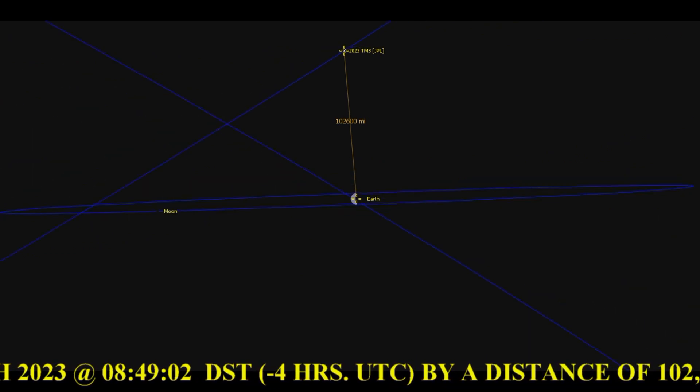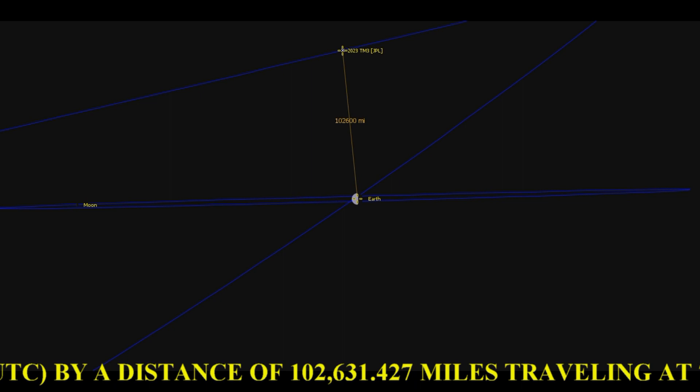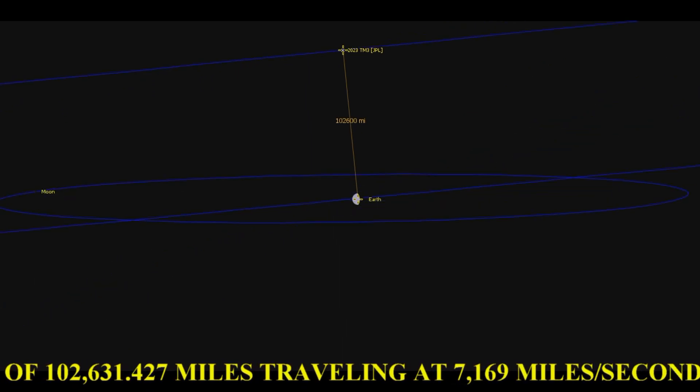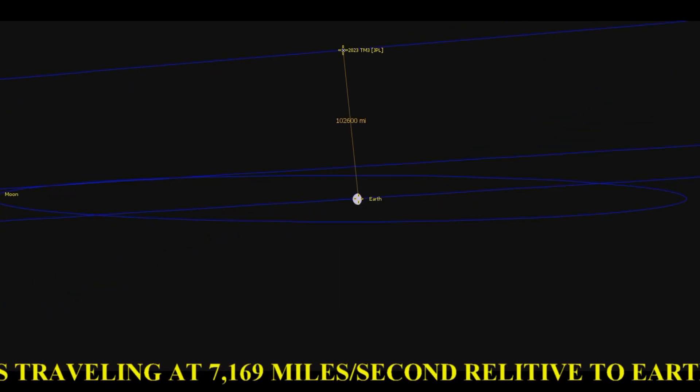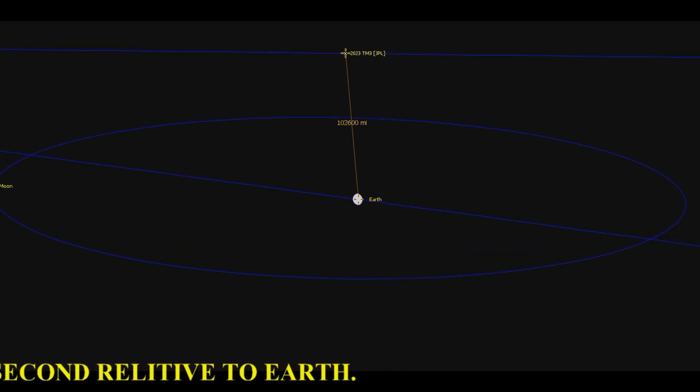The asteroid will slip past Earth's northern hemisphere on October 10, 2023 at 8 hours 49 minutes and 2 seconds Eastern Daylight Time, that is minus 4 hours UTC.